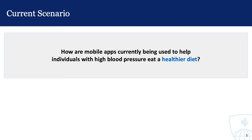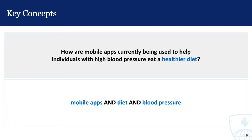We can use this question to develop the type of search strategy that we would use if we were conducting a comprehensive literature search. From our question, mobile apps, diet, and blood pressure are our key concepts.